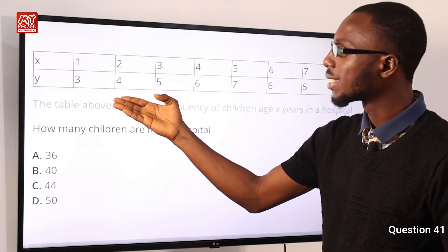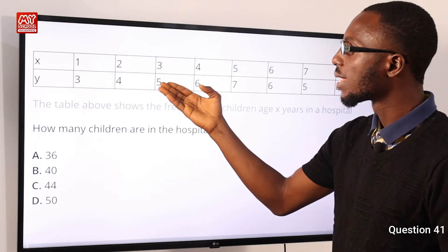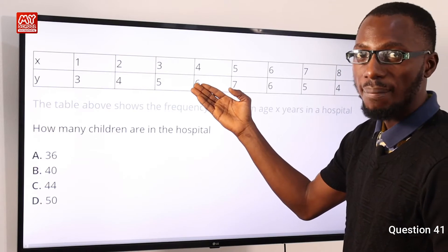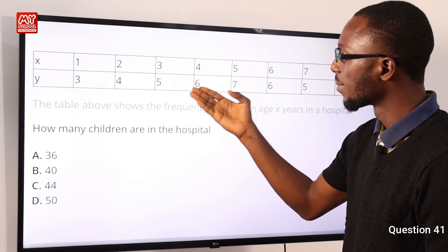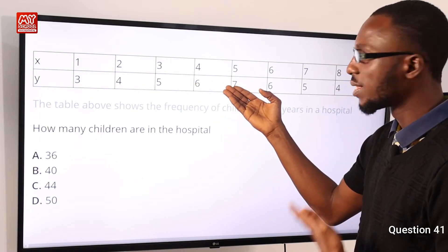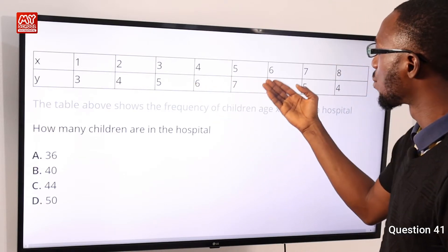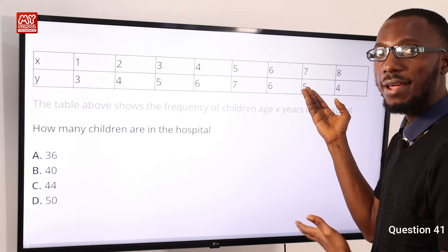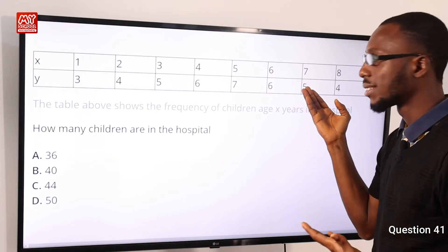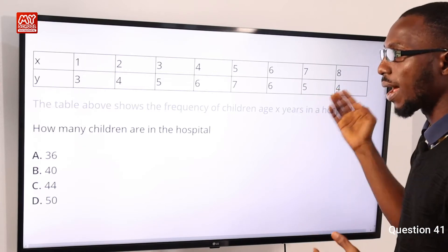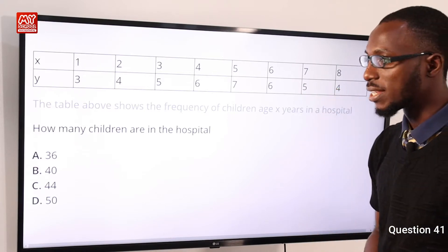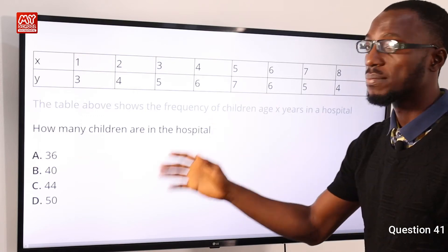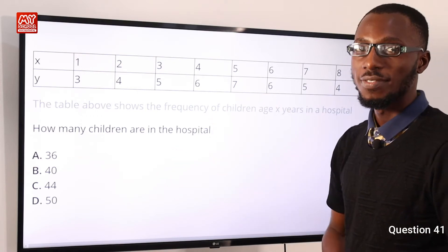3 plus 4 is 7; 7 plus 5 makes 12; 12 plus 6 makes 18; 18 plus 7 makes 25; 25 plus 6 makes 31; 31 plus 5 makes 36; 36 plus 4 makes 40. So we have 40 children in the hospital. Option B is correct.